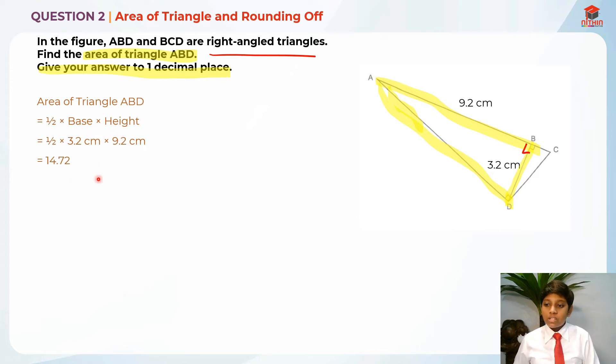But this is not the answer yet. We need to round it off into one decimal place. So what we need to do is actually 14.72, right? We need to take a look at 7. So this is 7 and we need to take a look at 2 as well.